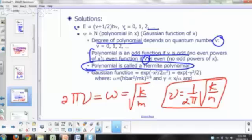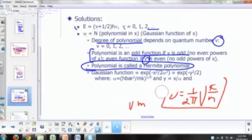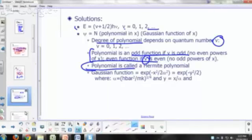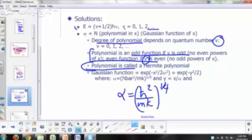And then the Gaussian function would be E raised to the negative X squared. You can see there's a squared term there. So E to the negative X squared over 2 alpha squared, where alpha is h bar squared over mk raised to the power 1 fourth.